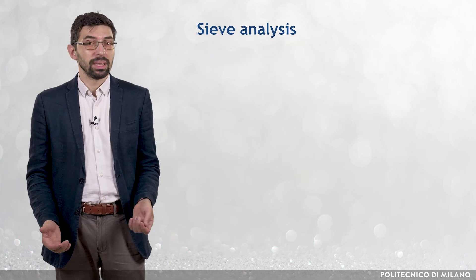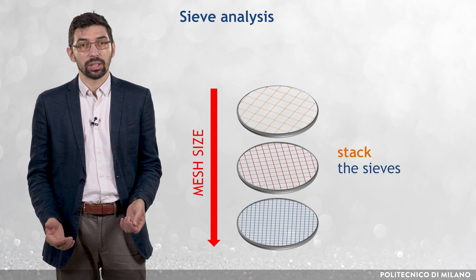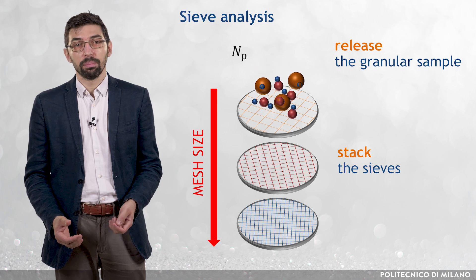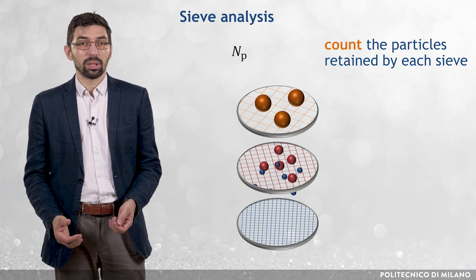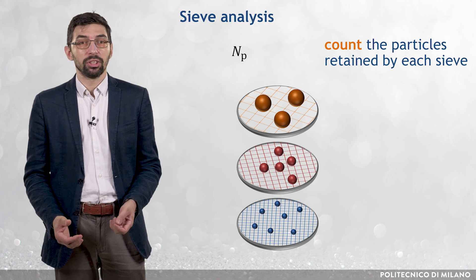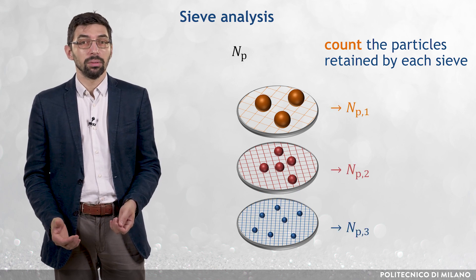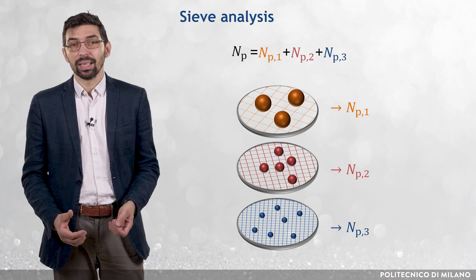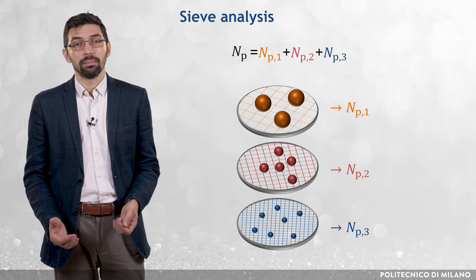The sieve analysis is obtained by stacking sieves with varying dimensions of mesh, releasing a granular sample consisting of NP particles from the top, and counting the number of particles retained by each sieve, that is NP1, NP2, NP3. Of course, NP1 plus NP2 plus NP3 is equal to NP.